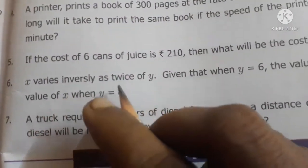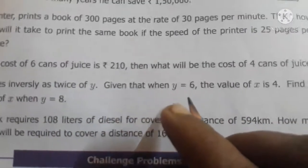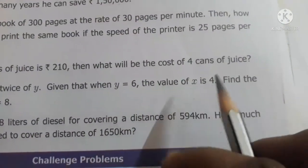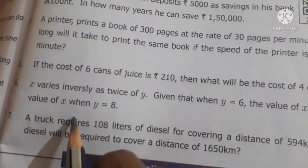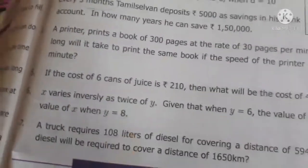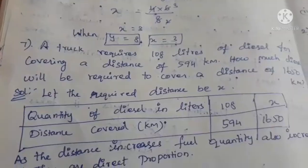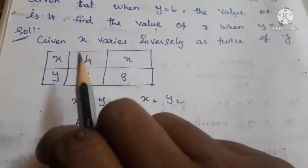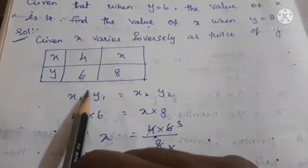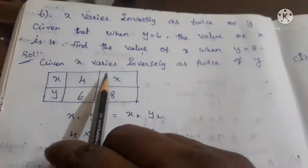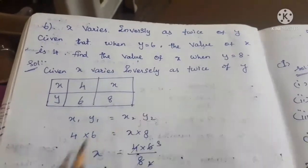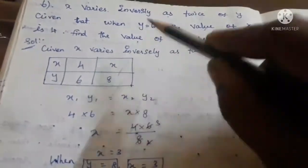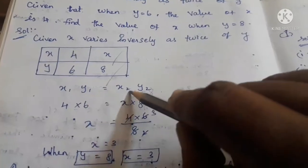Next, the 6th sum. x varies inversely as twice of y. Given that when y = 6, the value of x is 4. Find the value of x when y = h. Since x varies inversely as twice y, we use the formula x1 into y1 = x2 into y2.